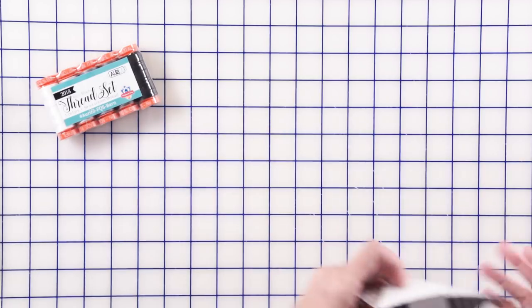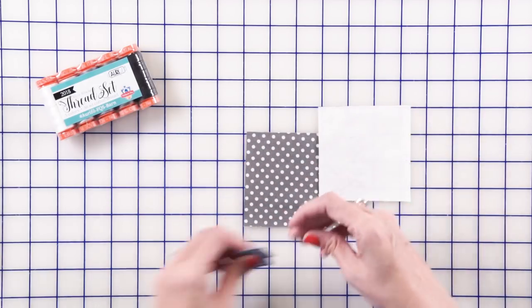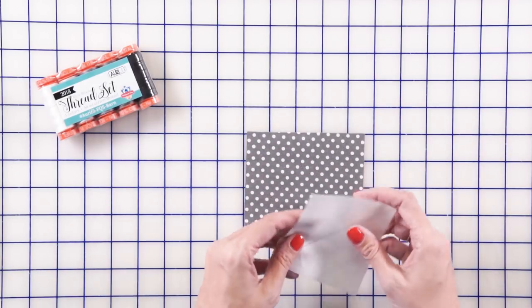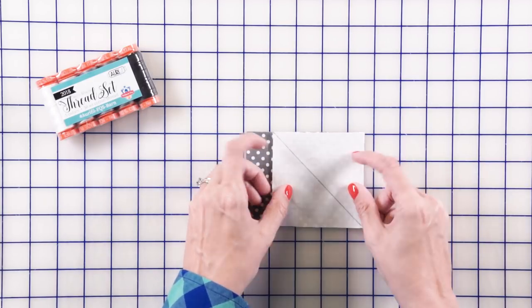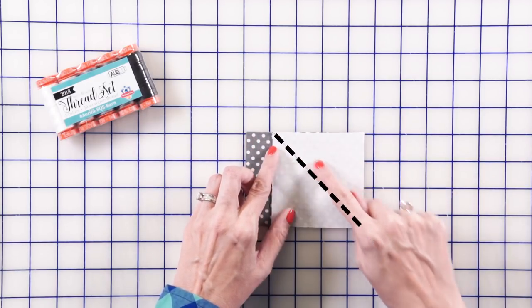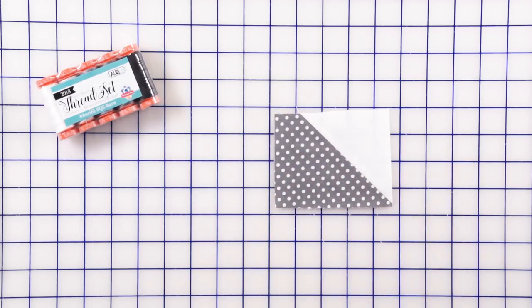So that's that unit. Then we've got a right unit to make. You're going to take a fabric E rectangle and a fabric B square. We're going to place the white this direction, stitch directly on the line and trim. And this is your right roof unit.